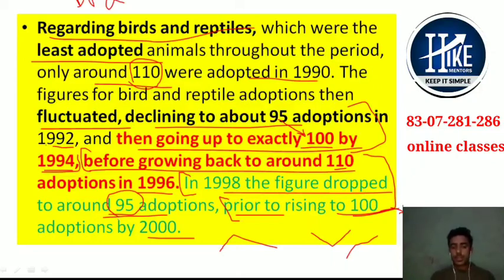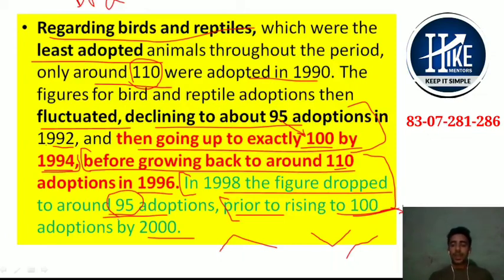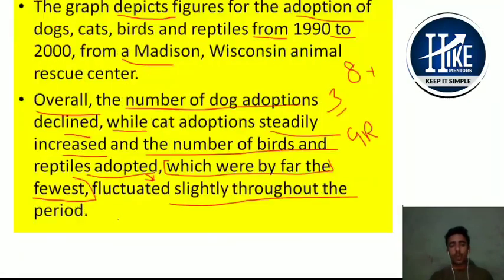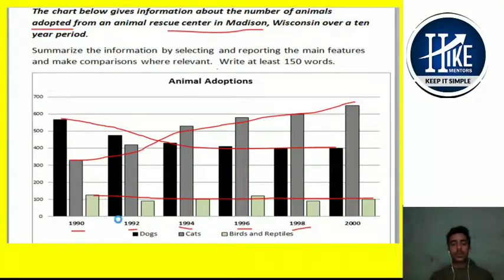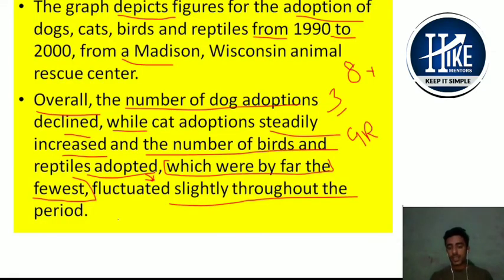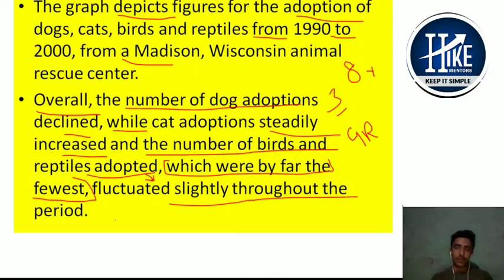If you want to discuss more, you can call on the given number. If you want your writing checked, I can discuss where you are lacking. Students scoring 5.5 or 6 who want to enhance their score — please subscribe to the channel, as we discuss advanced language daily. Right now the priority is to go through the whole video again and again, take a notebook, look at the graph carefully, note key points, and repeat the Task 1 video. Use complex sentences if you want to score 7 or 8 in writing. Subscribe, share the videos, and thanks for watching.